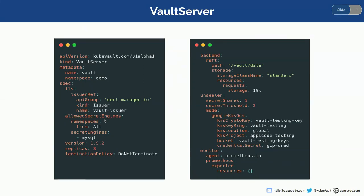I'm currently allowing all namespaces and only the MySQL secret engine, so any other secret engine that wants to be attached to the Vault server will be denied. I'm using the latest version of Vault, 1.9.2, with three replicas. Termination policy is set to 'do not terminate.' As the backend I'm using Raft, and as the unseal method I'm using Google KMS GCS. To configure that, I'll need to create a secret to connect to the GCS bucket, which I have already created.